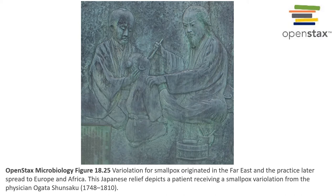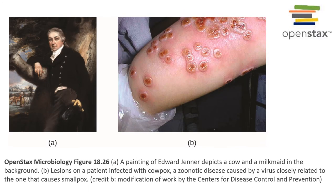Variolation was a practice used for thousands of years; however, it was a somewhat risky practice because some percentage of patients exposed to smallpox would develop a severe smallpox infection, and some of those patients would have died from smallpox. So variolation was an early form of artificially acquired immunity.